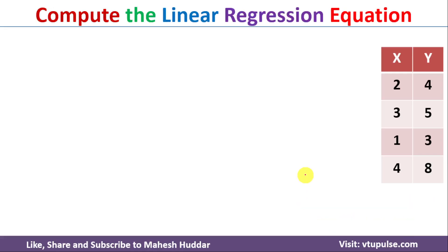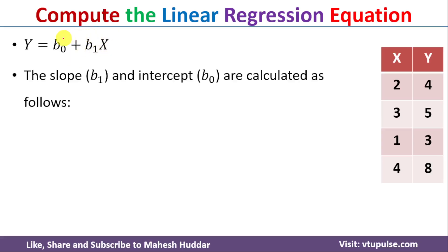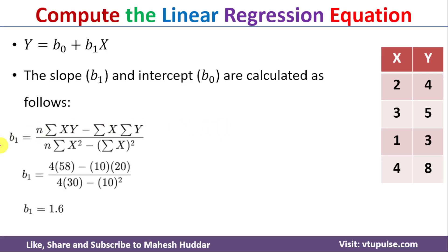Since r ≈ 0.956, it means there exists a strong positive correlation between x and y. Next, we compute the linear regression equation y = b0 + b1·x. We need to find the slope b1 and the intercept b0. The formula for b1 is: b1 = (n·Σxy − Σx·Σy) / (n·Σx² − (Σx)²).